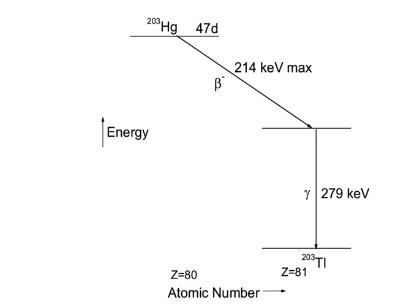Internal conversion is possible whenever gamma decay is possible, except in the case where the atom is fully ionized. During internal conversion, the atomic number does not change, and thus no transmutation of one element to another takes place.